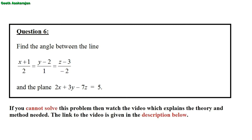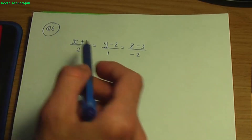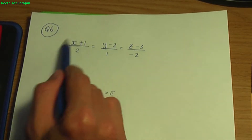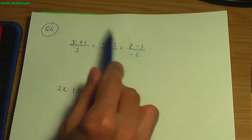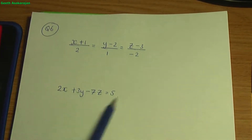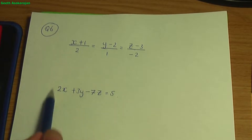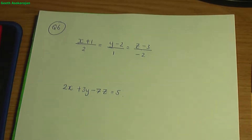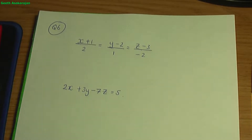Let's go back to the paper and pen. We have the line in Cartesian form and the plane in Cartesian form. In order to find the angle between the line and the plane, I have a screenshot just to remind you of the relevant result.